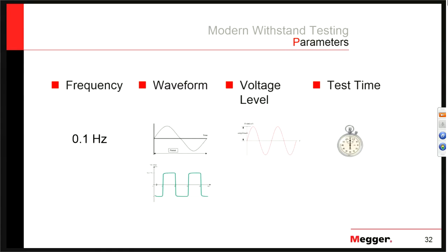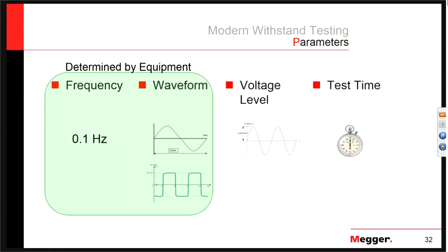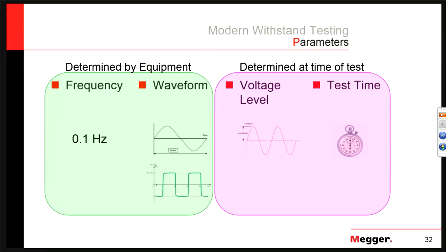The parameters of VLF tests are: frequency, voltage, waveform, and test time. Frequency and waveform are typically dictated by the equipment you get — they're going to be 0.1 Hz and either sinusoidal or cosine rectangular. That's a decision made at purchase time. The voltage level and test time are what you need to know at the time of the test, and they're based on where the cable is in its lifespan.